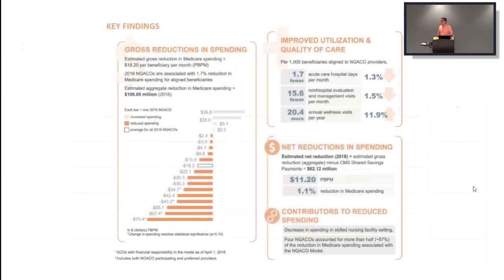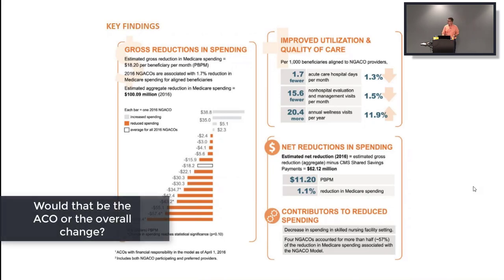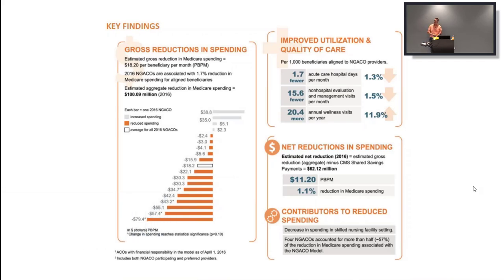The net reduction in patient spending is estimated at $62 million in shared savings just from those 18 ACO organizations. CMS is seeing that quality is increasing and average patient spending is less than under fee-for-service. Worth noting: these are CMS's own numbers, so while I'm not accusing them of p-hacking, the numbers are naturally presented favorably for their own initiative.